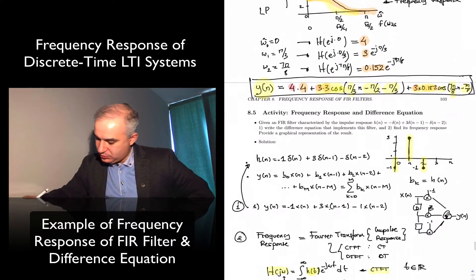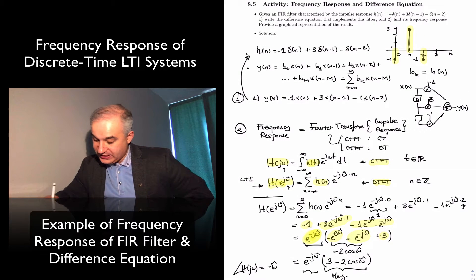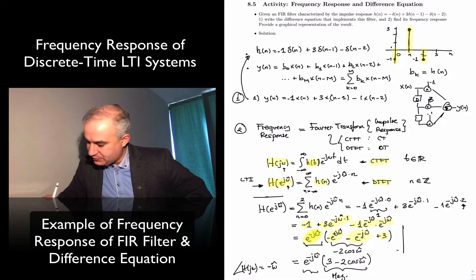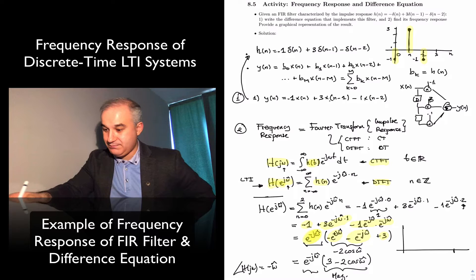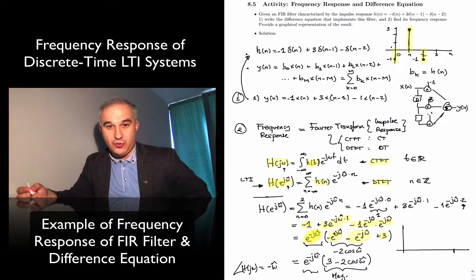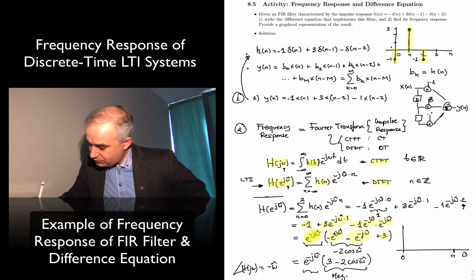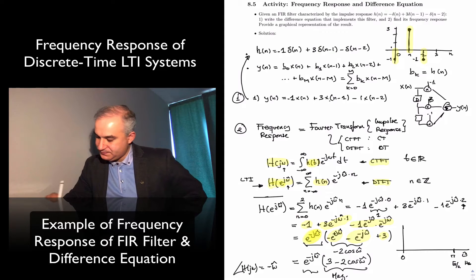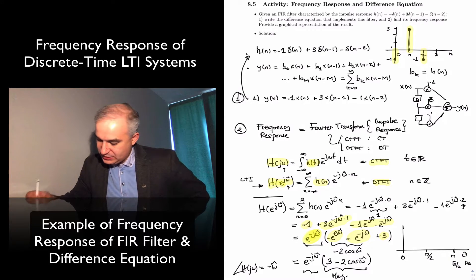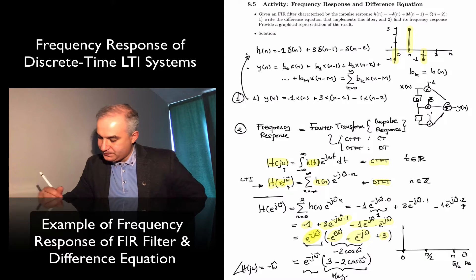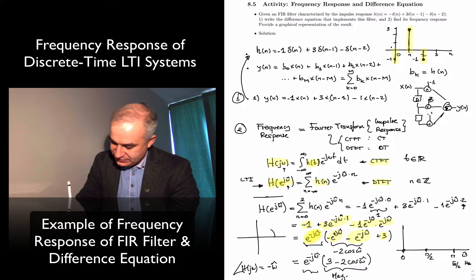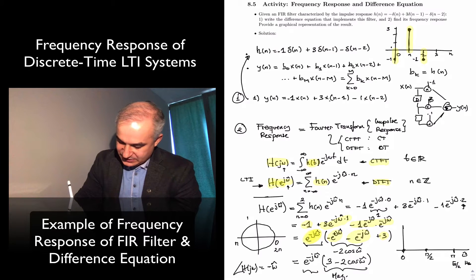From this form, we can read off the phase and magnitude directly. The phase of H is equal to −ω̂ (from the e^(−jω̂) factor), and the magnitude response is |H(e^(jω̂))| = |3 − 2·cos(ω̂)|. We can evaluate this at a few key frequencies. The normalized spectrum for a real signal runs from 0 to π, equivalent to 0 to fs/2 in hertz, with π/2 at the midpoint.